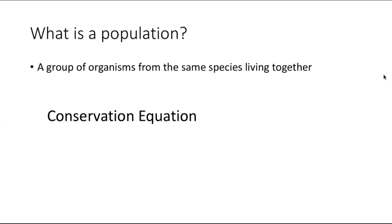We want to think about how we predict what's going to happen in the next time step. So we have N(t+1) — the population size at the next time step — equal to the population size now, plus births minus deaths, plus immigration minus emigration. This is really the starting point we'll use for any process when thinking about modeling a simple population: how do we get to the next year from the information we have about births, deaths, immigration, and emigration?